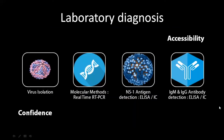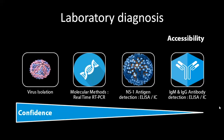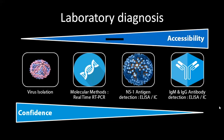Laboratory diagnosis of Dengue virus relies mainly on four methods: virus isolation, molecular methods like real-time reverse transcriptase PCR, NS1 antigen detection by ELISA or immunochromatography, and IgM or IgG antibody detection using ELISA or immunochromatography. Confidence level is very high in direct methods like virus isolation, molecular methods, and antigen detection, while accessibility is very good with antibody detection.